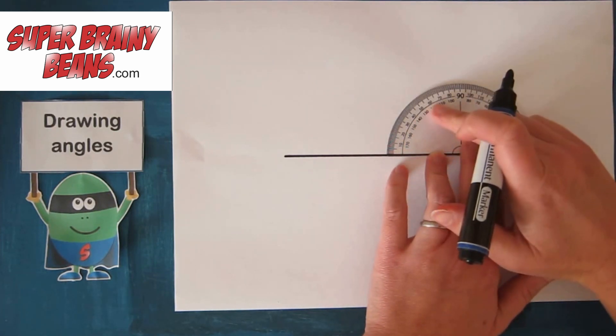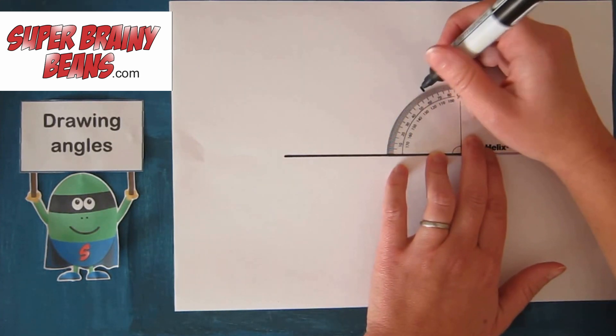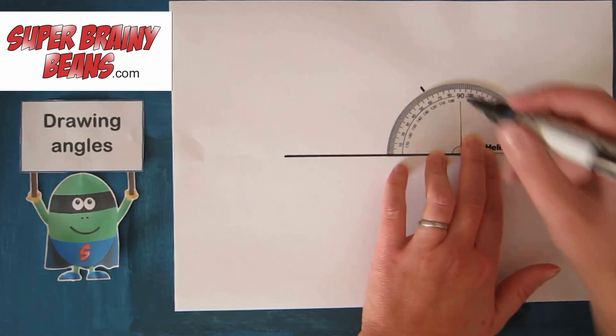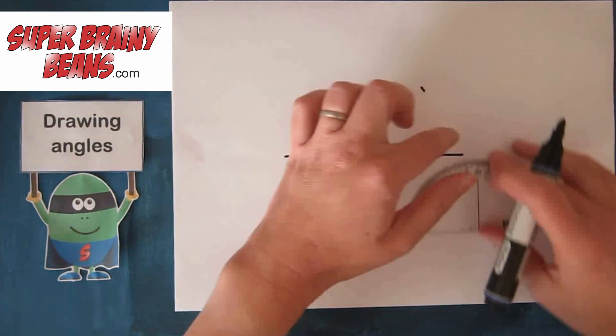So I look for 60, I make a mark. Now you'll have a sharp pencil and have a better, more accurate line.